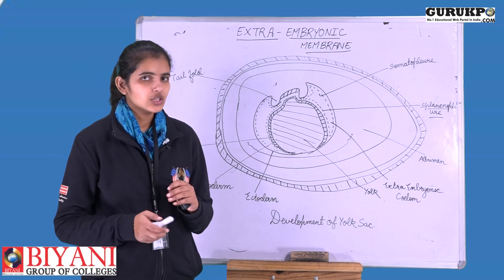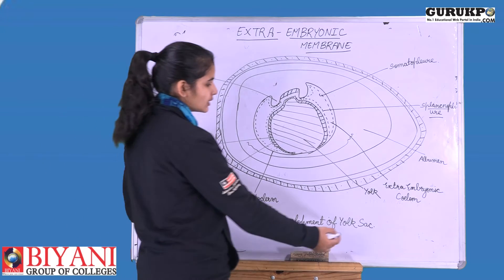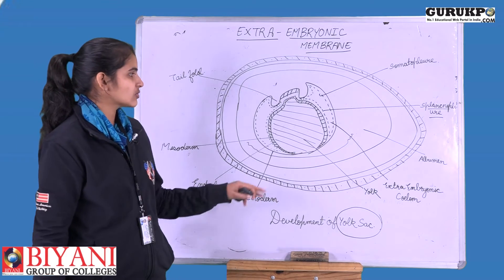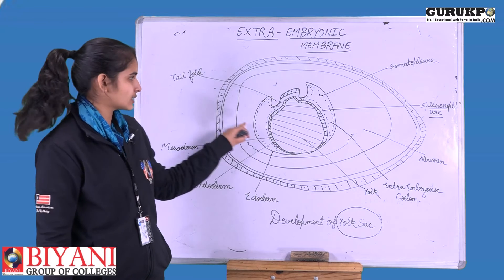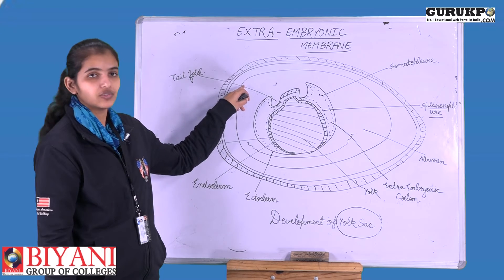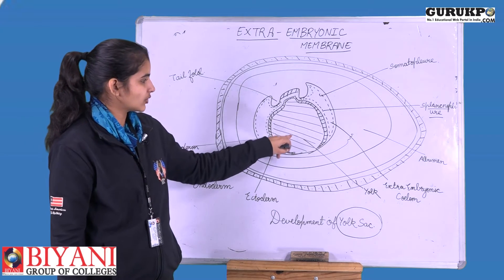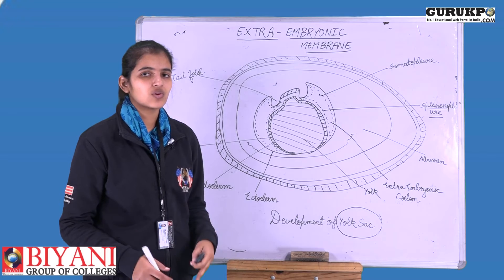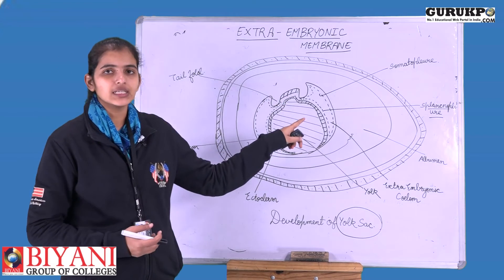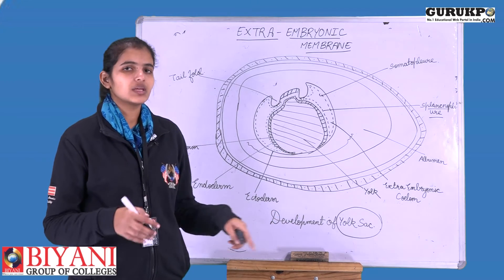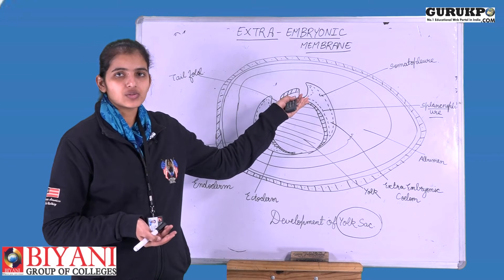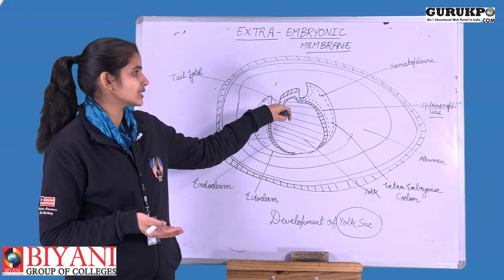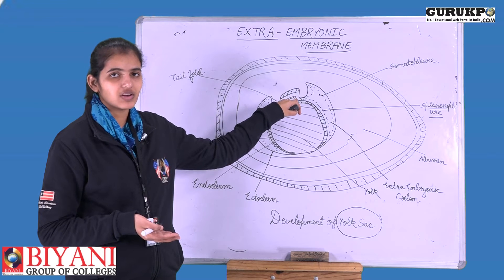These membranes also have specific functions related to the specific needs required by the embryo. We will start with the first extra-embryonic membrane — the yolk sac. As we can infer from the name, the yolk sac is formed around the yolk. At this stage of the egg, the embryo has started to develop a tail fold. The layer around it should be permeable both inside and outside so that exchange can take place.